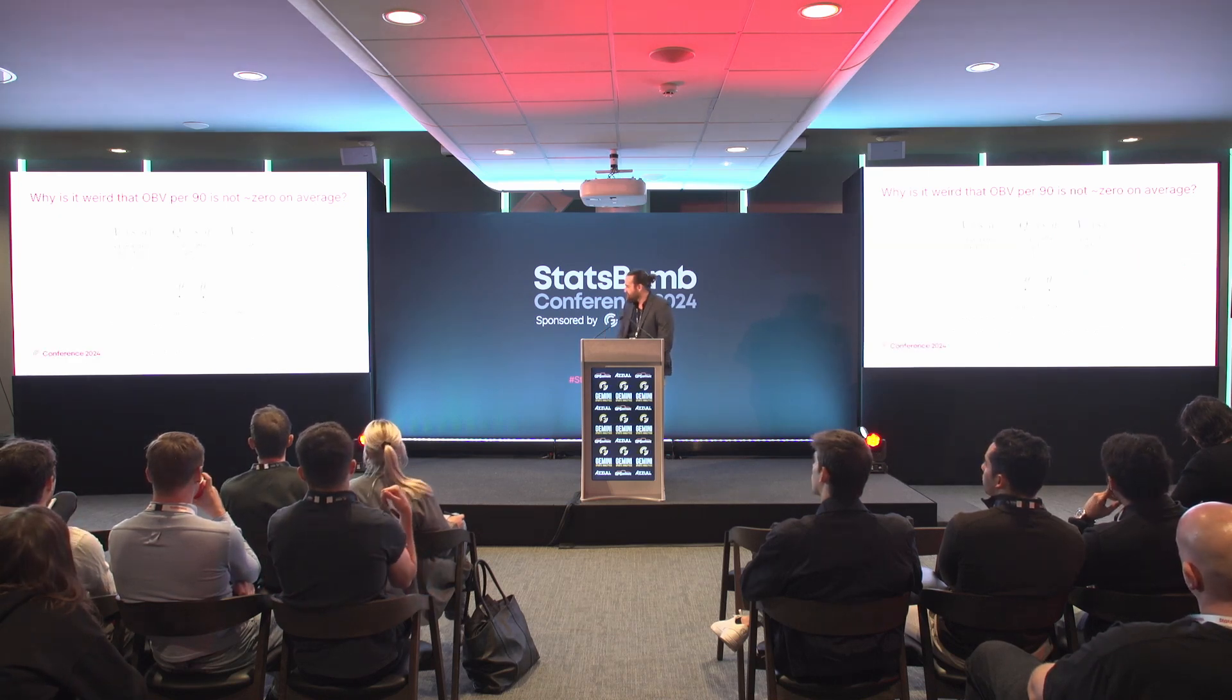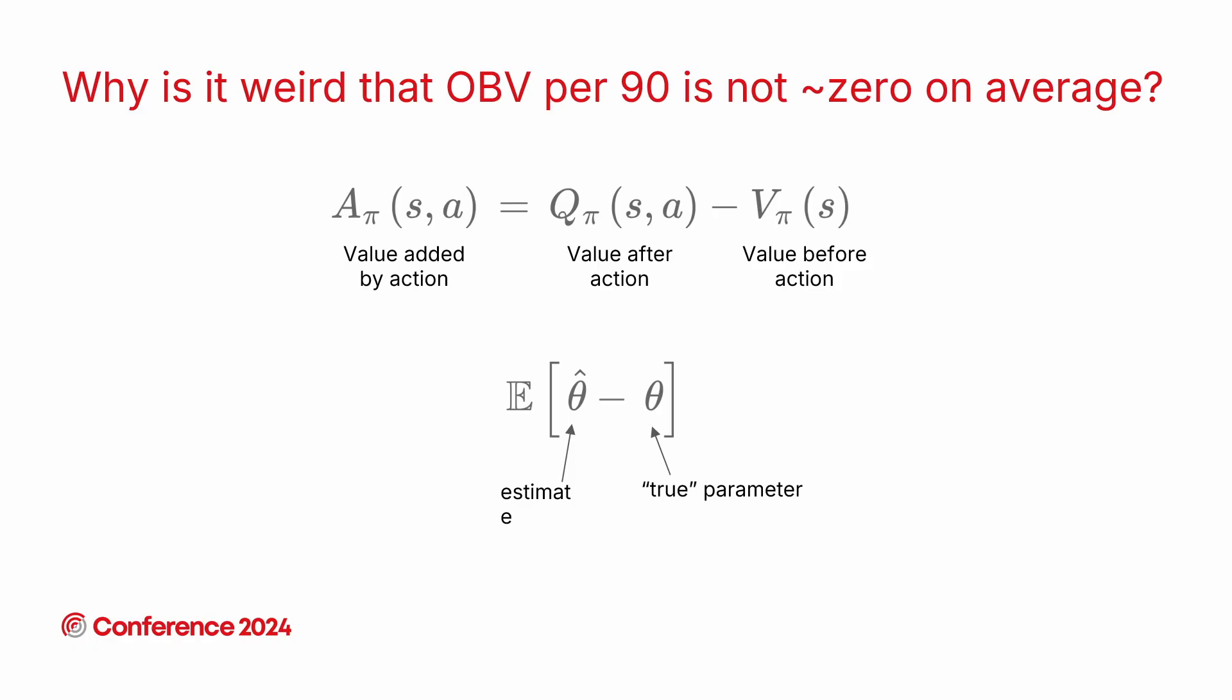I'm going to introduce a bit of notation. I'm calling A the thing we're trying to estimate to value a player's action. That stands for advantage. I'm calling Q the value after you've performed the action and V the value before you've performed the action. So this is the standard value added by an action thing we use in all possession value models really. And then the second definition there is bias of a statistical estimator. When we're trying to estimate a quantity statistically there's some true underlying value of that quantity that exists but we're not aware of. And then we have some data in the model that leads to an estimate which we denote by putting a hat on top of that thing.